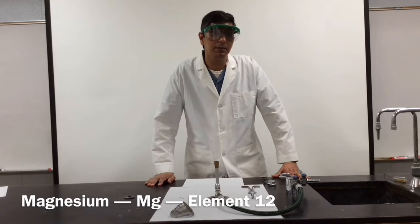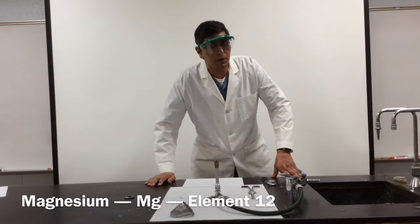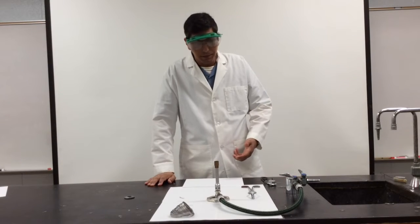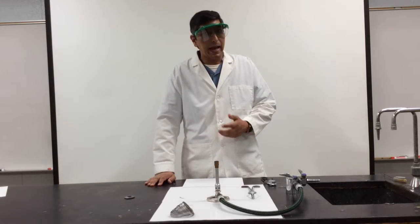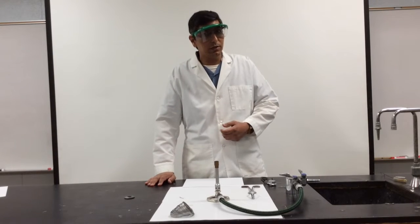Magnesium has the symbol Mg. It's element number 12 on the periodic table. It is a metal. And today we're going to see what happens when magnesium is added to oxygen in a flame.